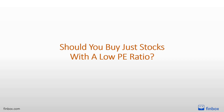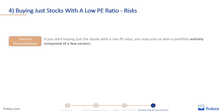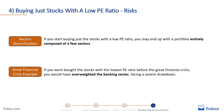After reading that low P/E ratio stocks generally outperform the market, you may be tempted to open the Finbox Stock Screener and start buying the stocks with the lowest P/E ratio. However, that would be a mistake. If you start buying just the stocks with a low P/E ratio, you may end up with a portfolio entirely composed of a few sectors. That would expose you to considerable risks in case one of those sectors should face a crisis. That is exactly what would have happened if you bought the stocks with the lowest P/E ratio before the great financial crisis — you would have ended up overweighting the banking sector and faced a severe drawdown.